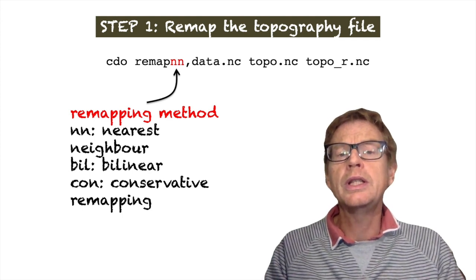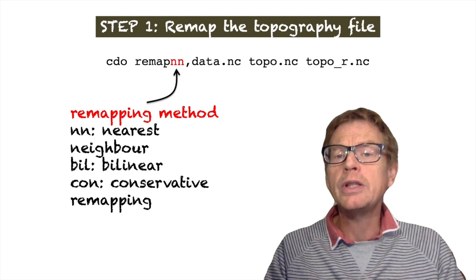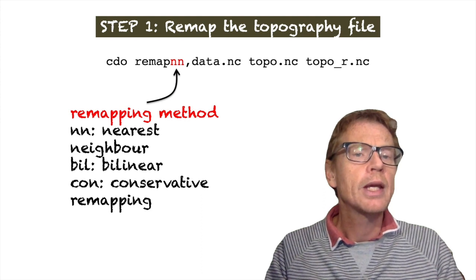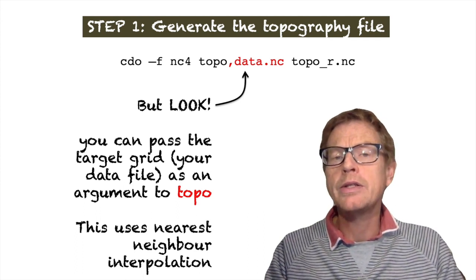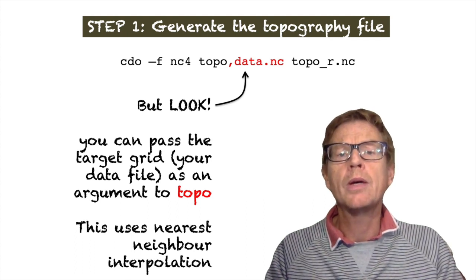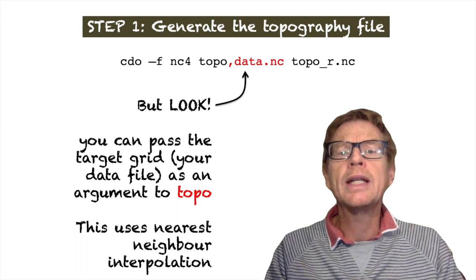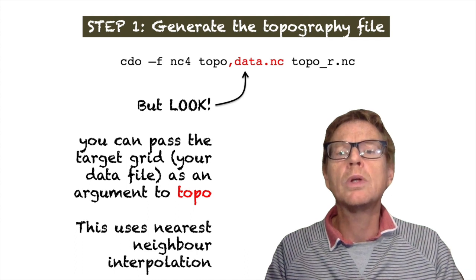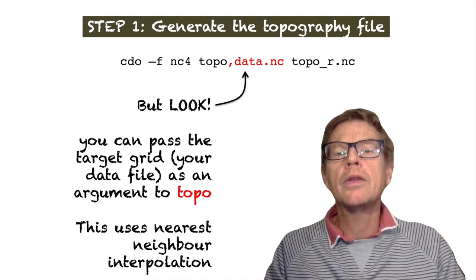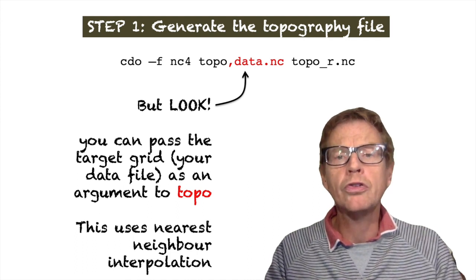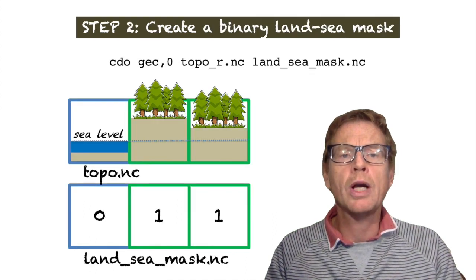I'm calling topo underscore R using CDO remap and then the target data file to specify the grid right after the comma. However, we don't actually need to do this in these two separate stages, because in fact what we can also do is we can provide the data file directly as an argument to the topo command. So here we actually combine these two together. We have CDO minus F NC4. Then we have topo to create the topographical file. And then comma and then the target resolution. We can just provide it our data file, data.nc. And then we have an output. So this will automatically regrid the topographical file onto the same grid and domain as the data.nc. Now this uses nearest neighbor interpolation. So if you want to use a different interpolation method, you will need to do the two separate steps. So that's step one. We now have a topographical file that's on the same resolution.